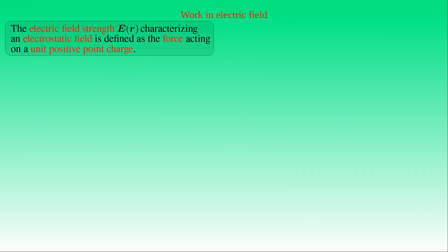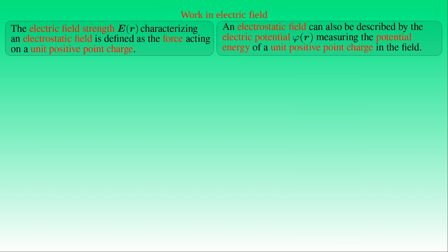An electrostatic field is characterized by the electric field strength E, which is a vector-valued function of position defined as the force acting on a unit-positive point charge at a given point in the field. An electrostatic field can also be described by a scalar function of position called electric potential, denoted by φ. Electric potential is the measure of the potential energy of a unit-positive point charge in an electrostatic field, and we can define it by determining the work done by the electrostatic field.